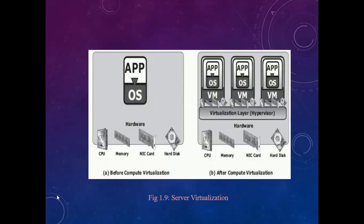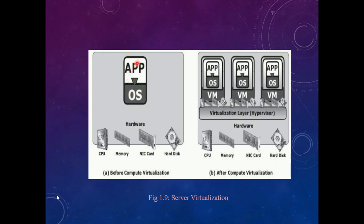Now let us look at the compute virtualization diagram. There are two diagrams: one showing the system before compute virtualization and another showing the system with compute virtualization. Before compute virtualization, think that you have a system or laptop with hardware resources like CPU, memory, NIC card, and hard disk. You have one single OS running on the system and only one single application running on that OS — for example, Windows operating system with one application.